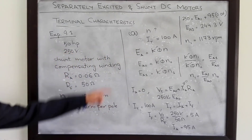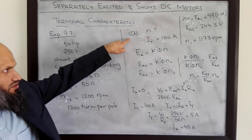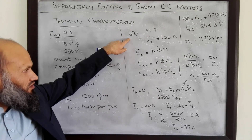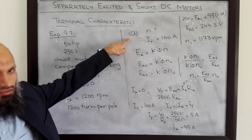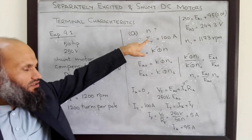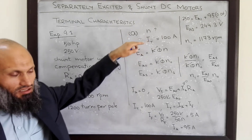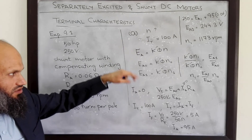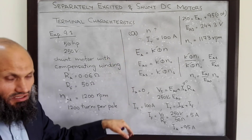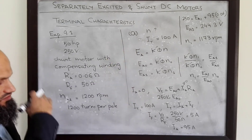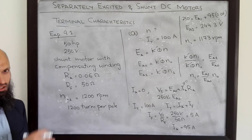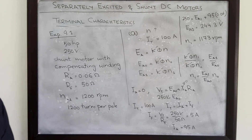The second and third parts of this question ask you to determine the speed corresponding to other current values, and then finally you can plot the complete torque-speed characteristics graph.